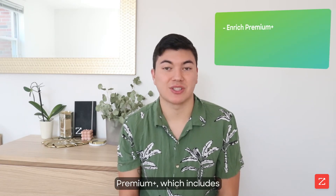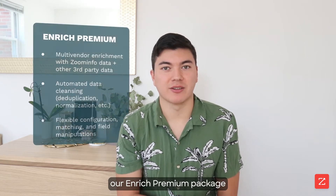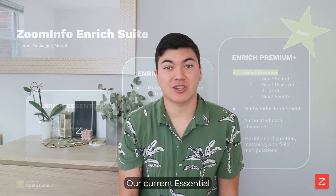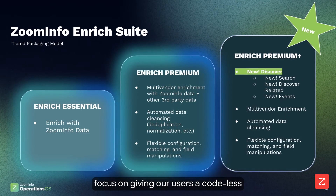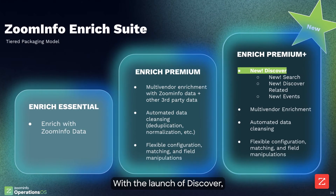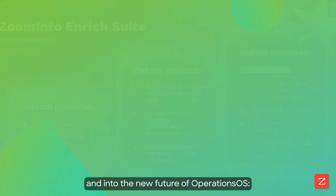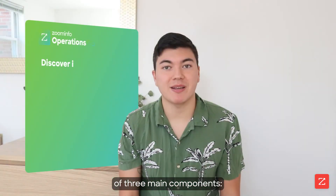Next up from Operations OS, we launched a new package called Enrich Premium Plus, which includes a new feature called Discover. Discover is what sets apart our Enrich Premium package from our new Enrich Premium Plus package. Our current essential and premium packages focus on giving our users a codeless way to manage their go-to-market data. With the launch of Discover, we're moving past the goal of increasing data quality and into the new future of Operations OS: net new data acquisition and activation. Discover is made up of three main components.